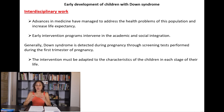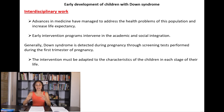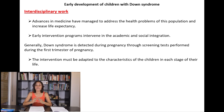Down syndrome is generally detected during pregnancy through a screening test during the first three months. The intervention must be adapted to the characteristics of children at each stage of their life. Inclusion in a normalized school context favors learning, development, and achieving an adequate degree of autonomy. The collaboration of the family is fundamental for the social and emotional integration of the child.